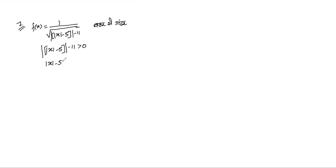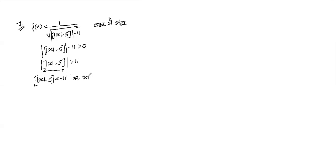So we have |x| (mode x), then minus 5, then the greatest integer of that, then another mode, minus 11. This whole expression must be greater than 0. Moving -11 to the other side gives us 11. So: the mode of (greatest integer of |x-5|) must be greater than 11. For any number whose mode is greater than 11, it is either less than -11 or greater than 11.